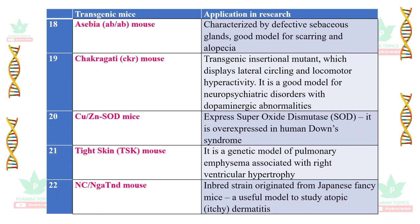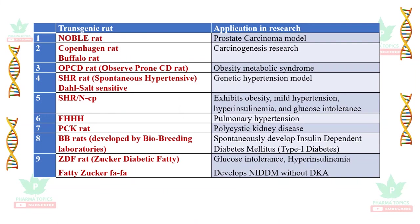Copper-zinc superoxide dismutase mice express superoxide dismutase, which is actually over-expressed in human Down syndrome. The tight skin (TSK) mouse is a genetic model for pulmonary emphysema associated with right ventricular hypertrophy. The NC/Nga Tnd mouse is an inbred strain originated from Japanese fancy mice and is a useful model to study atopic or itchy dermatitis.